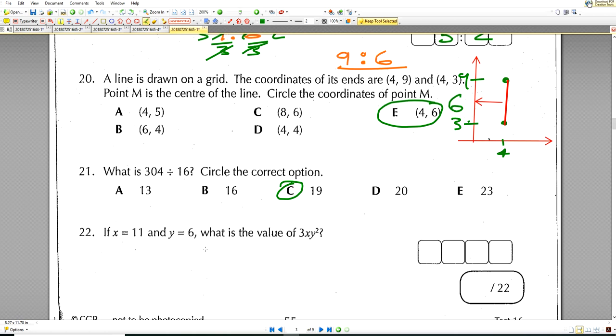Next question. If x equals 11, y equals 6, then what's the value of 3xy squared? So 3 times the x value times the y value squared. So that's 3 times by 11. That'll give you 33. And 6 squared is 36. And if you take the time to work that out in lower multiplication method, that'll give you 1188.